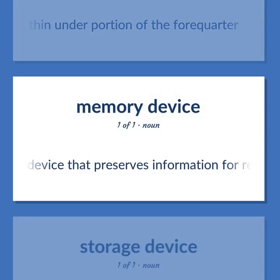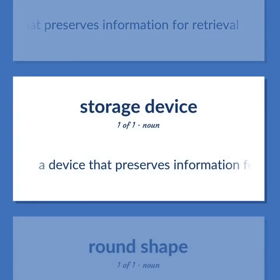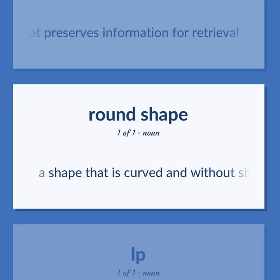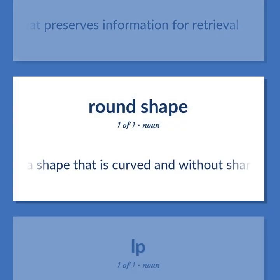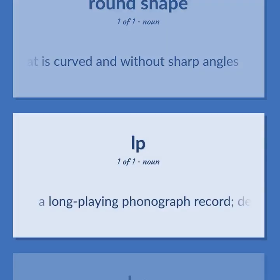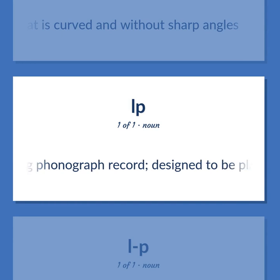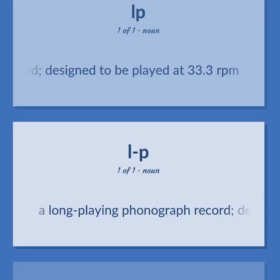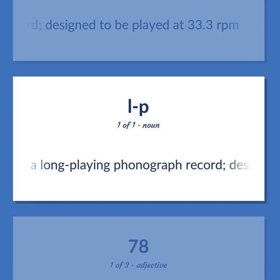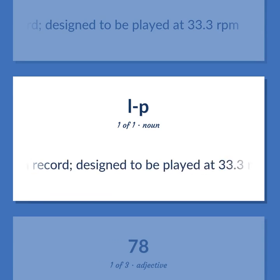A device that preserves information for retrieval. A shape that is curved and without sharp angles. A long-playing phonograph record designed to be played at 33.3 revolutions per minute.